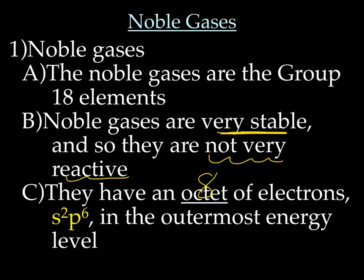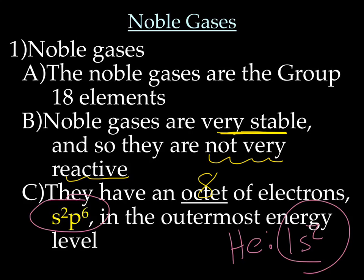Most of them — all but one — end in S2P6. What's so special about the noble gases is that they have the maximum number of valence electrons for that energy level. Remember, valence electrons can only come from the S and P sublevels, so the maximum number of electrons for energy levels two and on is eight: S2P6. Helium doesn't have an octet — it ends in 1S2.